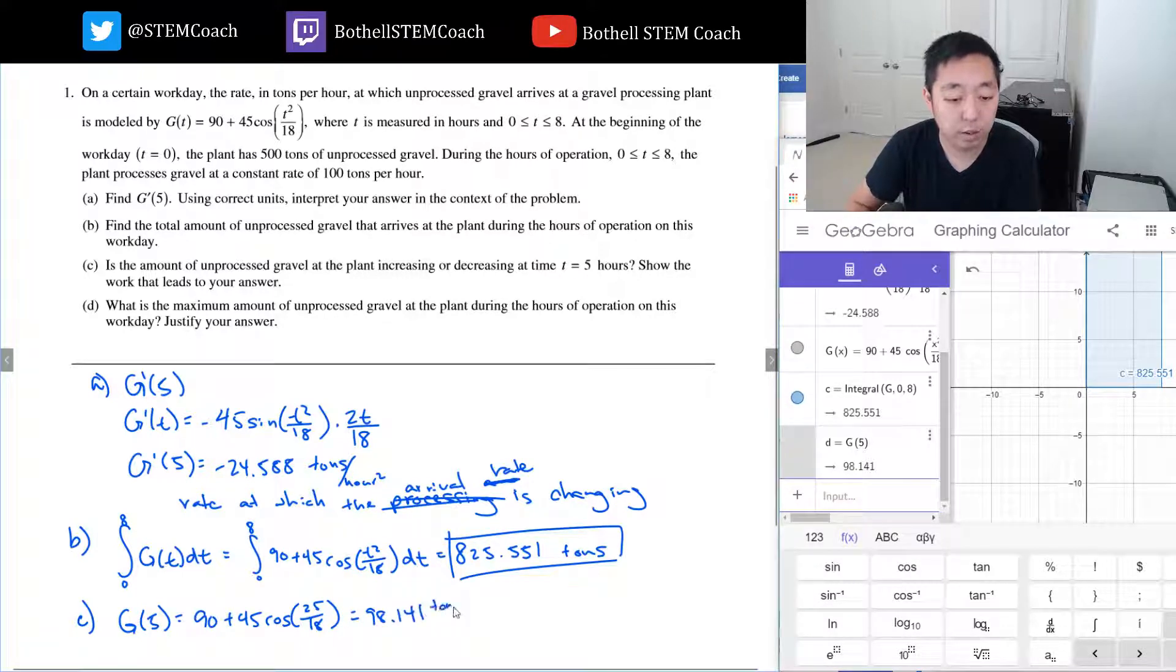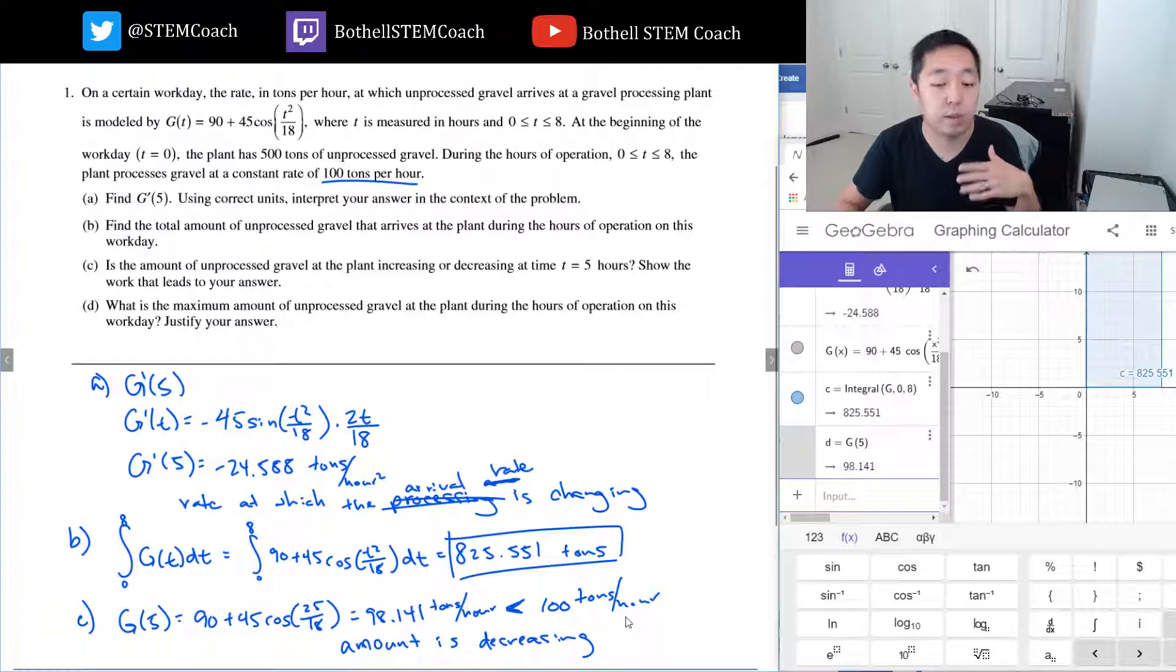This is how much is arriving, which is less than how much it's processing. It's processing 100 tons per hour. So that means the amount of gravel is decreasing, because what's coming in is 98 tons per hour and what's leaving or what's being processed is 100 tons per hour, so that's decreasing.